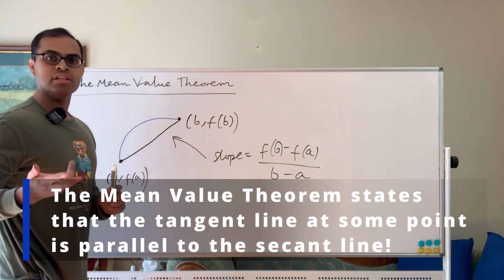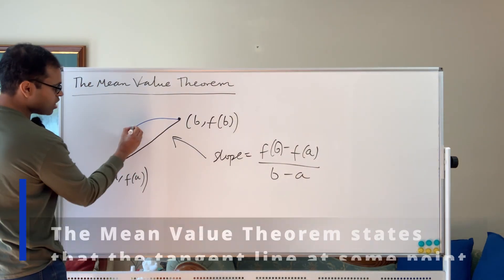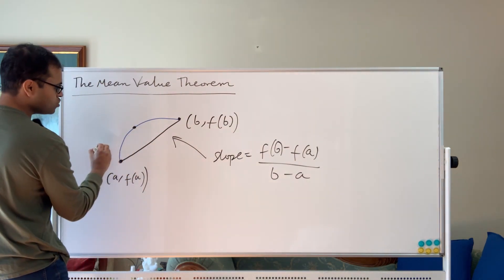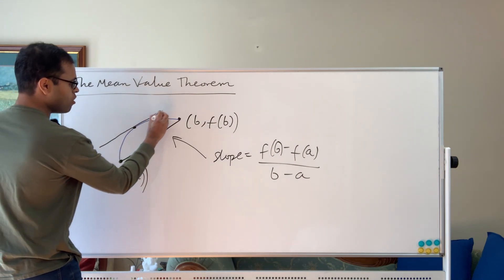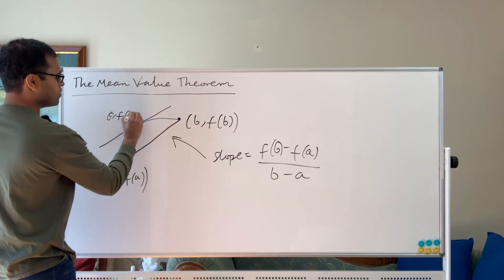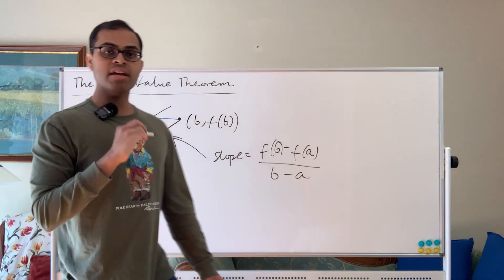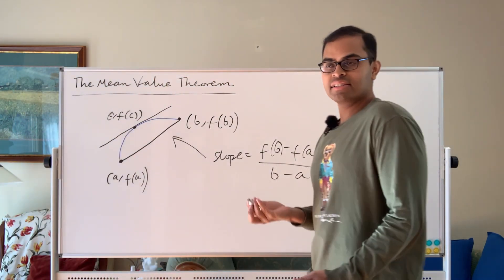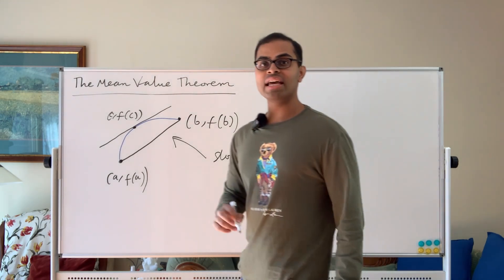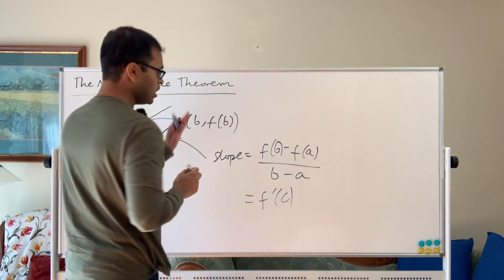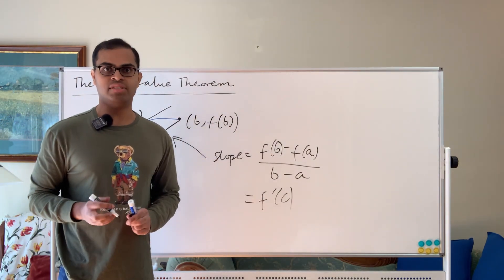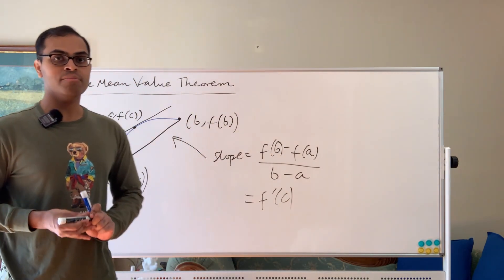If you look at the graph, you can visually picture it as follows. If you take a point roughly somewhere there and draw the tangent line to the graph at that point, it is going to be parallel to the secant line. So let's say this point is c comma f(c). In the language of derivatives, the slope of the tangent line at c is just going to equal f'(c). So the mean value theorem is saying there is some c inside the interval such that the slope of the secant line matches up with the slope of the tangent line — in other words, f'(c).